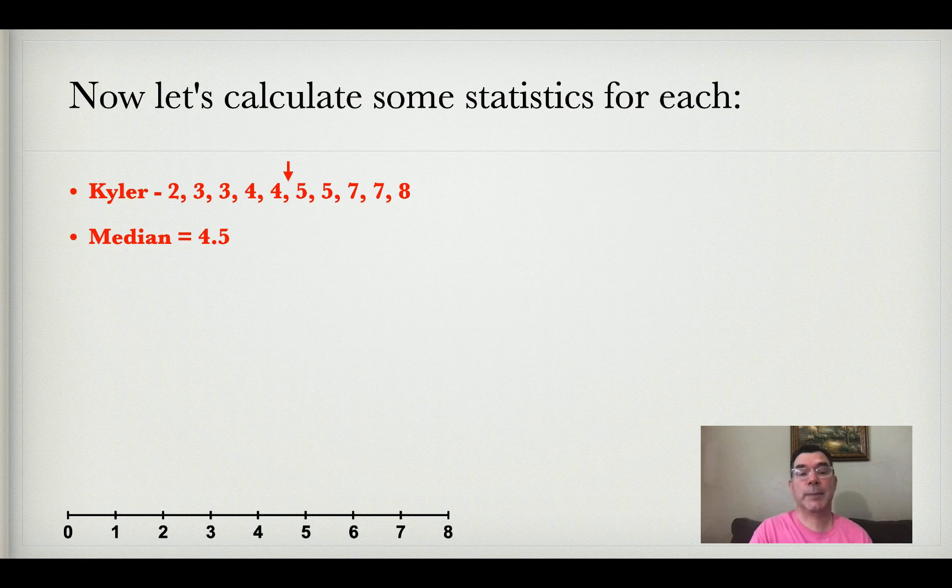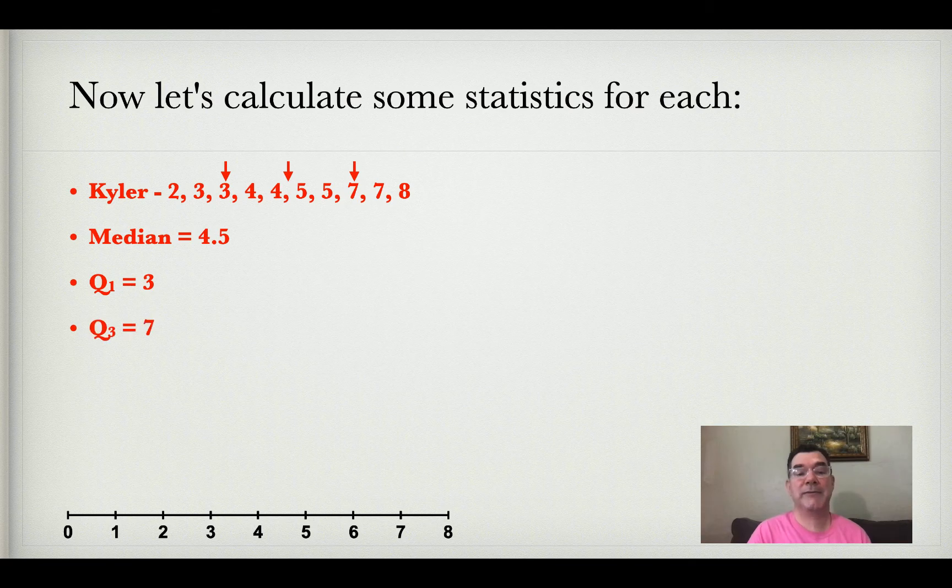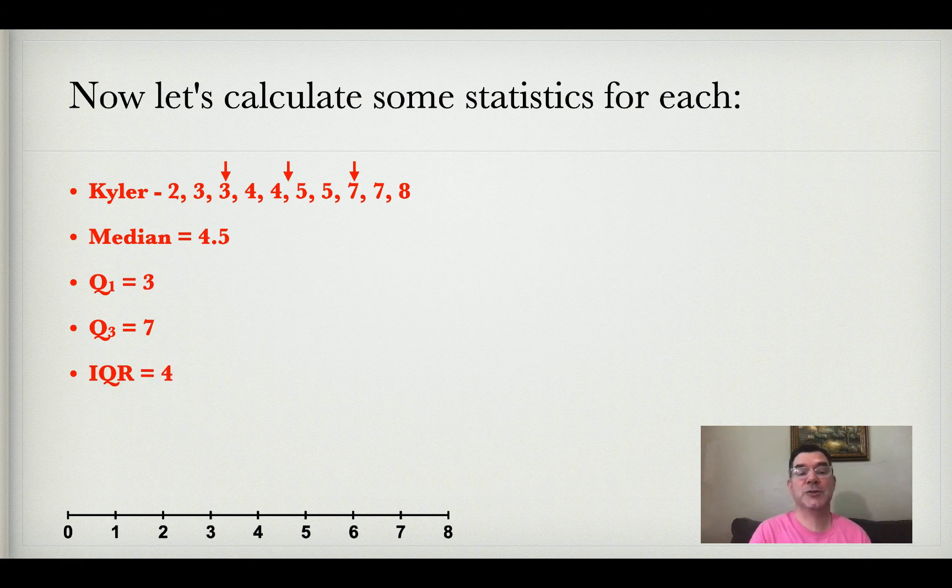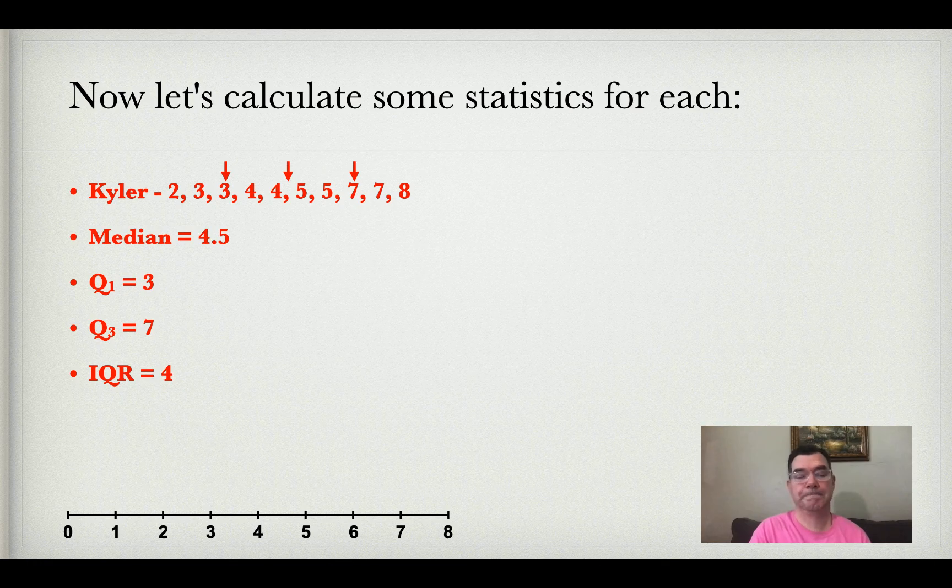Now the list is separated into two halves, each with five numbers. The median of the lower five numbers is three, that's the lower quartile Q₁ = 3. The median of the upper half is seven, the upper quartile Q₃ = 7. The interquartile range is the difference, seven minus three, which equals four. So IQR = 4.